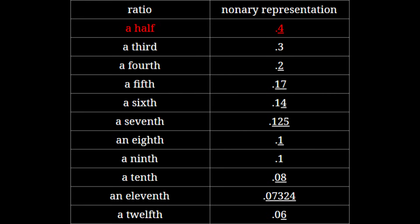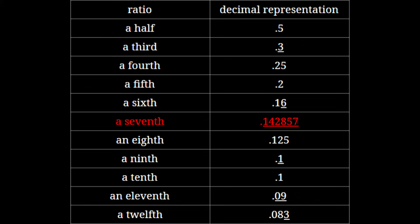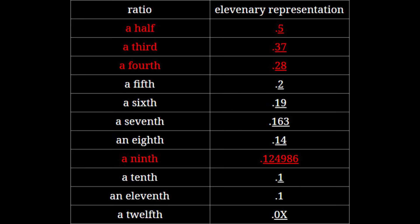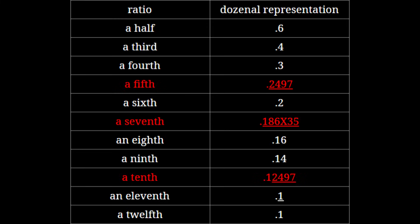Base 9 — nonary. Nonary is probably the most usable odd base, pretty much entirely because 9 is equal to 3 squared. Its convenient ratios almost make up for how it can't do halves — almost. If you're gonna fail at one ratio, halves are the worst one to fail at. Base 10 — decimal. I trust you know about this one already. Base 11 — elevenary, also known as undecimal. Elevenary is prime base number 5 — it's sometimes suggested as a joke, since 11 is right between 10 and 12, making it a great compromise between decimal and dozenal. Speaking of, base 12 — dozenal. You know this one.